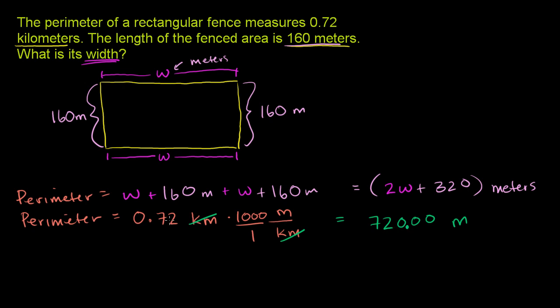And that makes sense. 0.72, it's not quite 1, but it's getting close to 1, and almost 3 fourths of a whole. And this is almost 3 fourths of 1,000. So it makes sense. So the perimeter, this information right here, 0.72 kilometers, is the same thing as 720 meters.